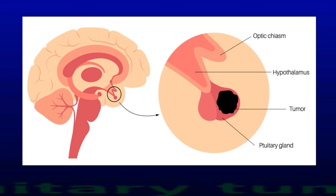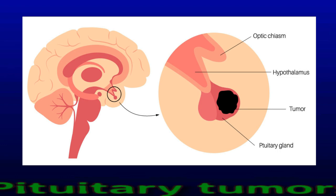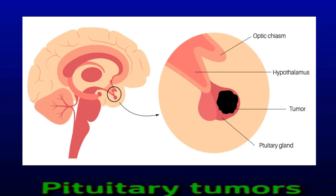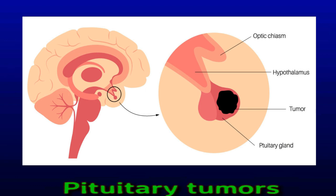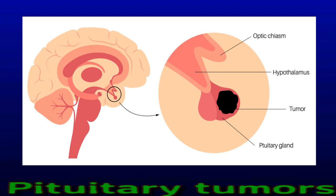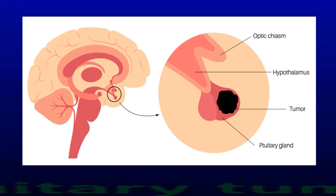Pituitary tumors occur when cells grow abnormally in the pituitary gland. They can cause pituitary gland disorders such as acromegaly and hypopituitarism. Pituitary tumors are typically benign — they tend to grow slowly and do not spread to other areas of the body. They cause the pituitary gland to produce abnormal levels of hormones, which can affect multiple functions in the body. Symptoms may include headache, vision problems, and nausea and vomiting. Treatment options may include surgery, radiation therapy, or drug therapy to remove or destroy the tumor.